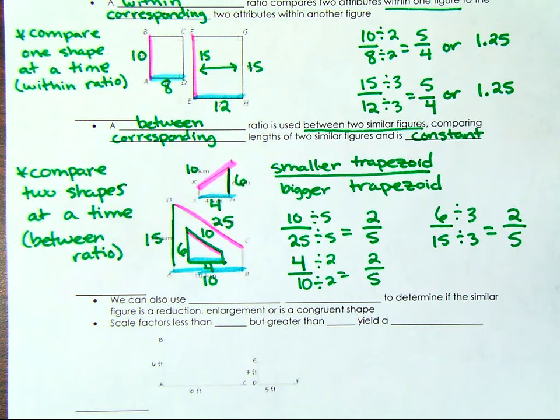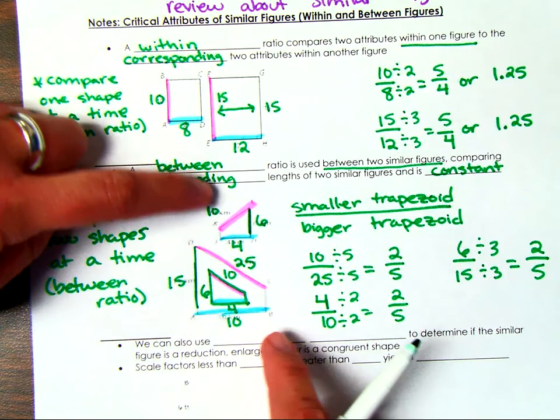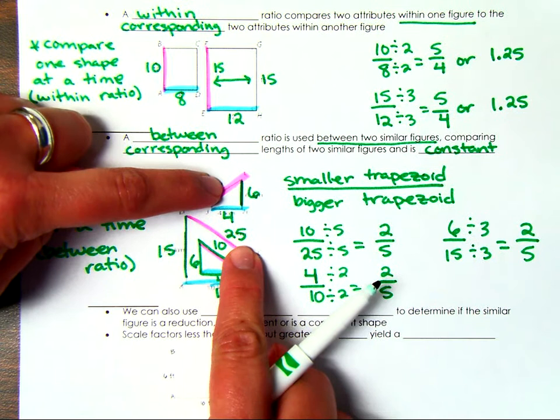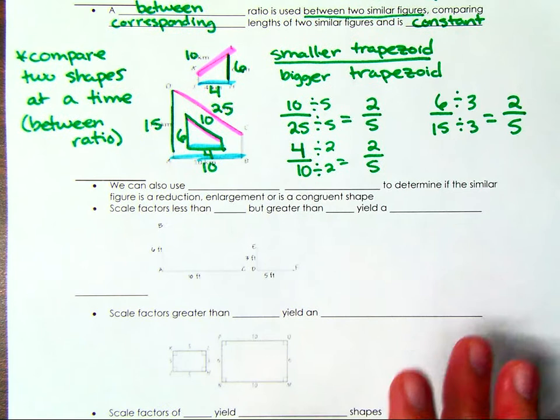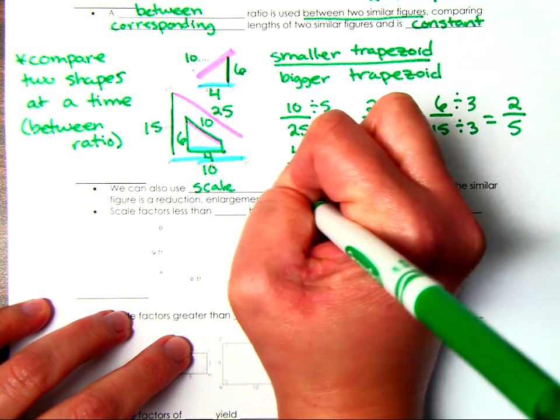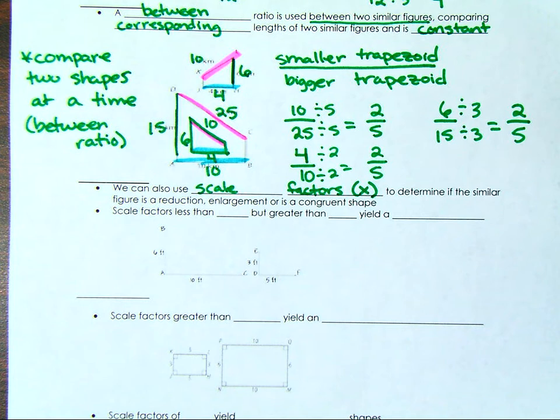Reviewing: you have to be careful when looking at two shapes at the same time. If you say 10 to 25 (smaller to bigger), your next ratio must also be smaller to bigger — not bigger to smaller. That's why labeling matters. Scale factors are numbers that we use to multiply, and they determine whether the similar figure is a reduction, an enlargement, or a congruent shape.